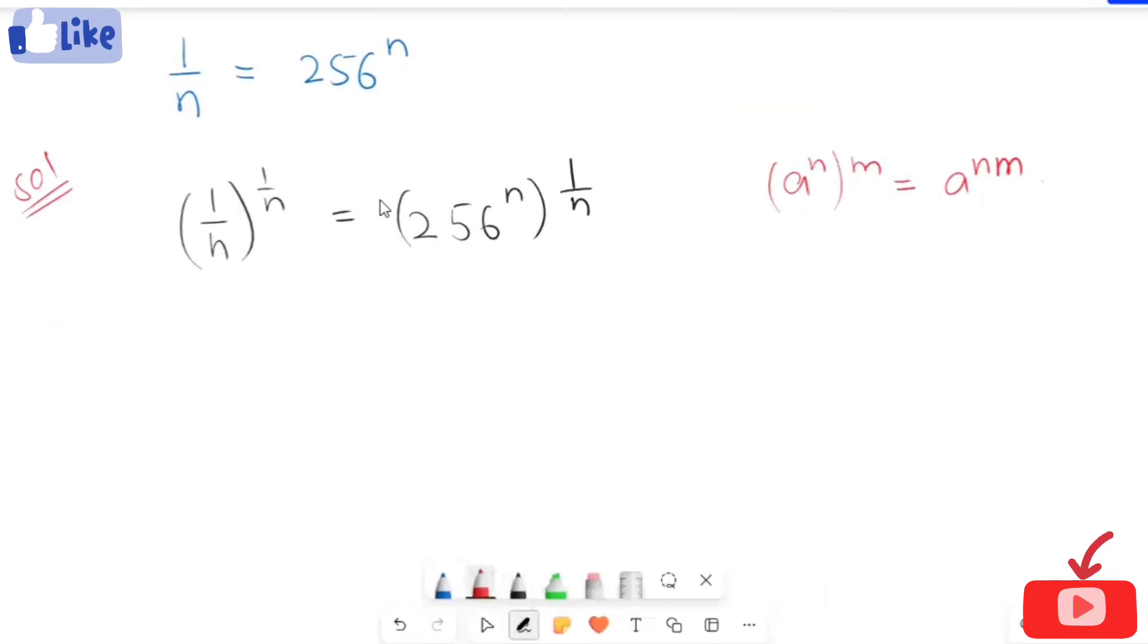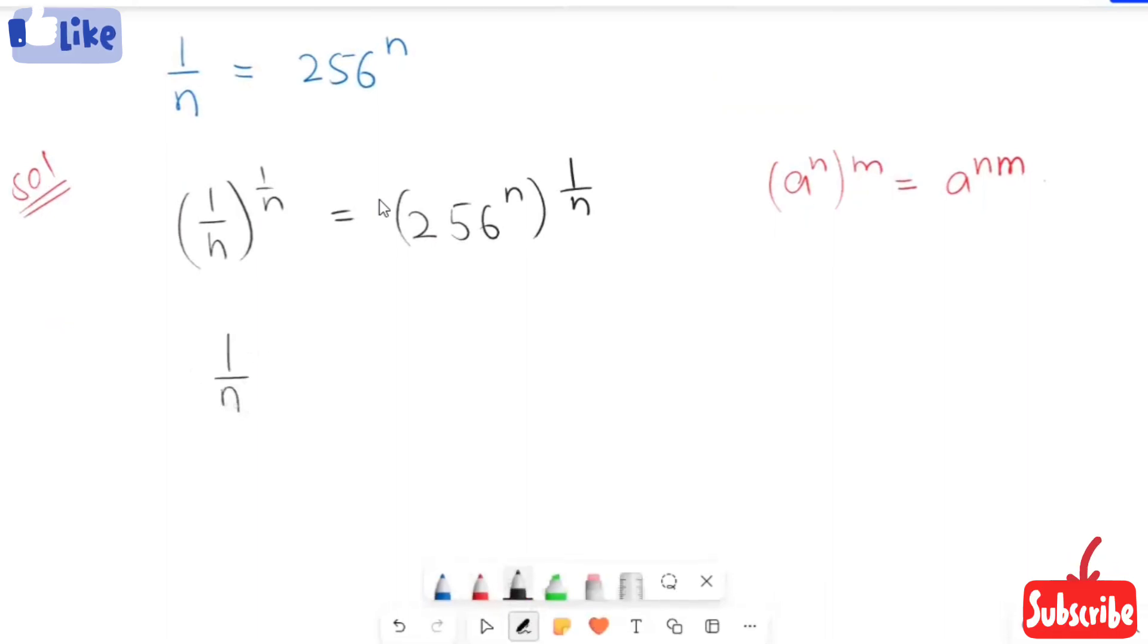I'm going to apply this exponential rule here. So it turns to 1 over n with power negative n is equal to 256 to the 1 over n. So that cancels.